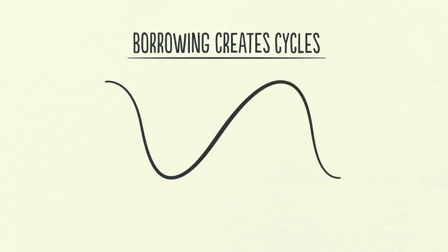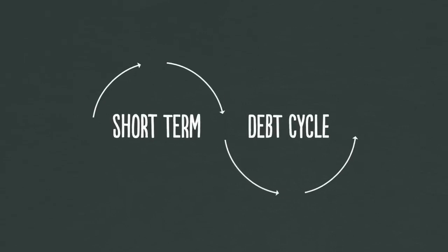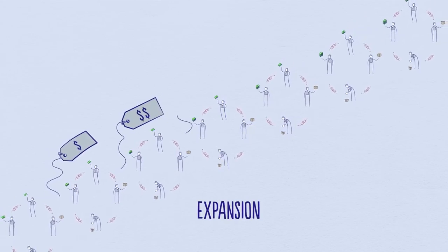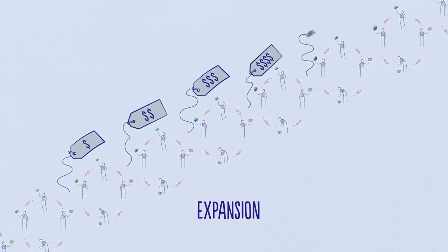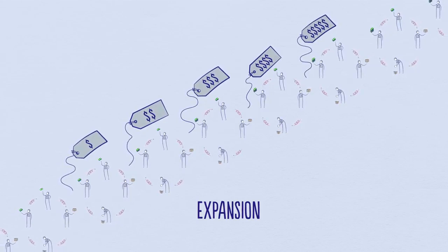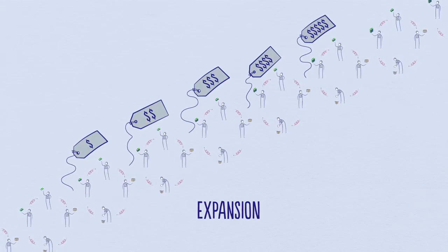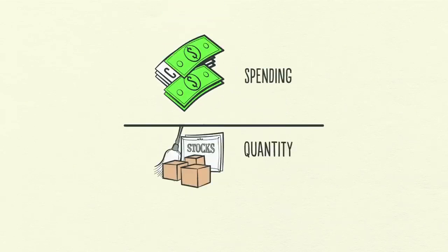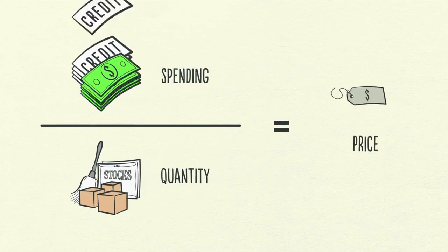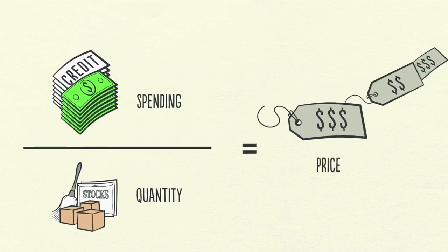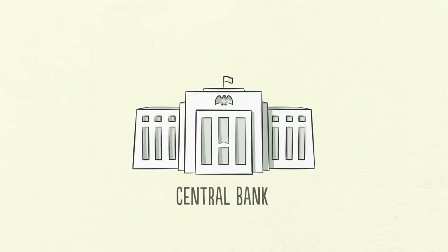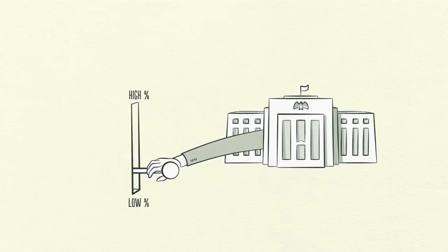This leads us into the short-term debt cycle. As economic activity increases, we see an expansion, the first phase of the short-term debt cycle. Spending continues to increase and prices start to rise. This happens because the increase in spending is fueled by credit, which can be created instantly out of thin air. When the amount of spending and incomes grow faster than the production of goods, prices rise. When prices rise, we call this inflation. The central bank doesn't want too much inflation because it causes problems. Seeing prices rise, it raises interest rates.